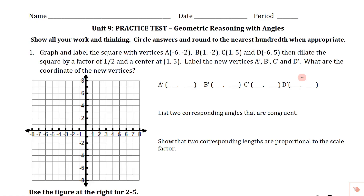Let's knock out this Unit 9 practice test. We've been talking about geometric reasoning and focusing on angles. Number one says graph and label the square — squares are nice, no slanted lines. With vertices A, B, C, and D, then dilate the square by a scale factor of one-half with a center of (1, 5).